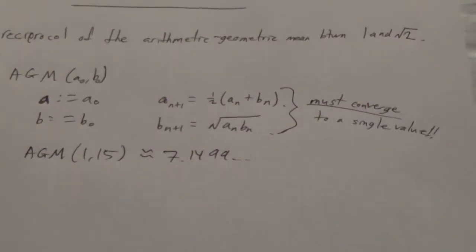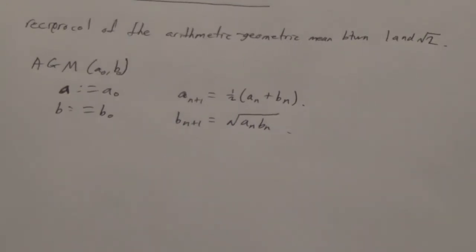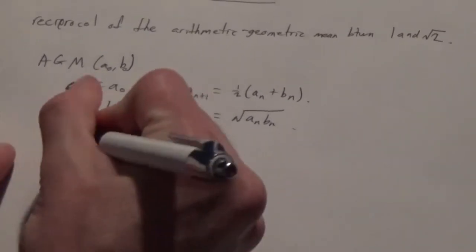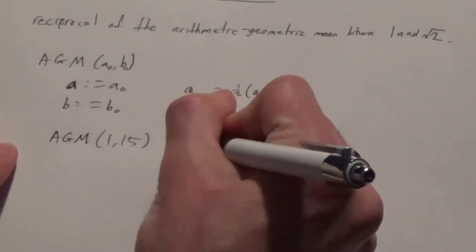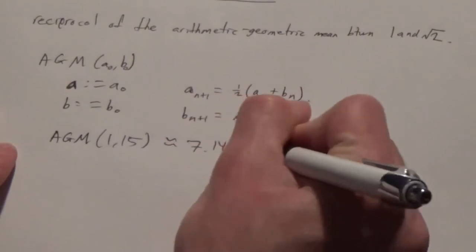And that value is, of course, the AGM, the arithmetic geometric mean. I actually wrote a Java program that can calculate the AGM, the arithmetic geometric mean, for any two positive rational values. For instance, the AGM between 1 and 15 would be approximately 7.1499.